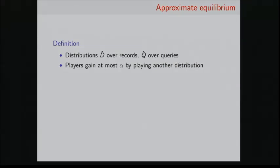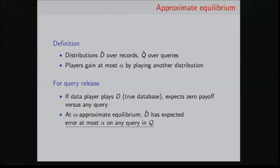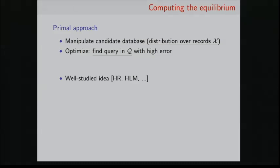Now, it's a very natural idea to look at what happens at the equilibrium of this game. So first, to define what equilibrium means, I'll just say that the data player has a distribution D hat over the records, and the query player has a distribution Q hat over the queries. We'll say we're at an approximate equilibrium if neither player can gain more than alpha by playing another distribution. So what does this mean for query release? We know that there's a true database, like a perfect database. So if this data player is playing this true database, he expects zero loss or zero payoff, because the error on any query is going to be zero in expectation. So what we can say is that if we're at this approximate equilibrium, the data player's strategy must answer all the queries in Q with error at most alpha. And this is very good, because this is exactly what we want for query release. So our goal will be to compute this equilibrium in a private way.